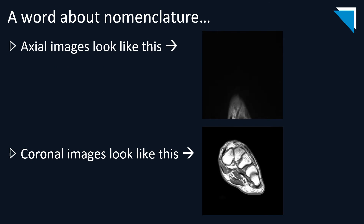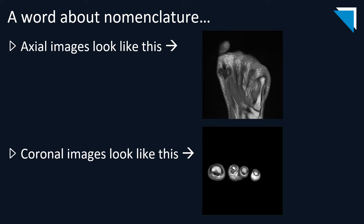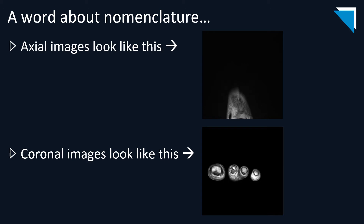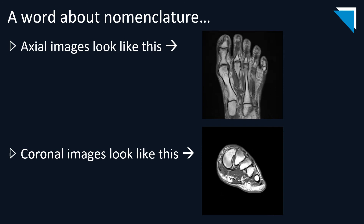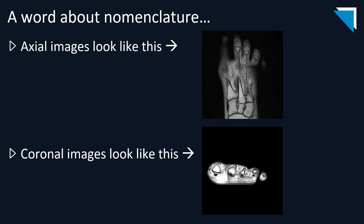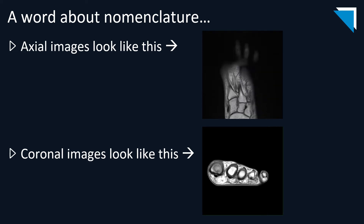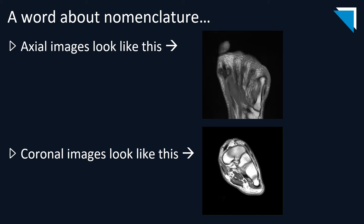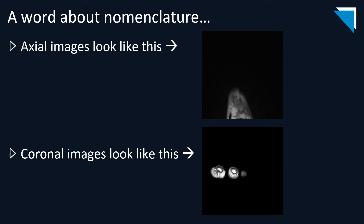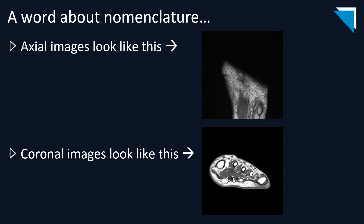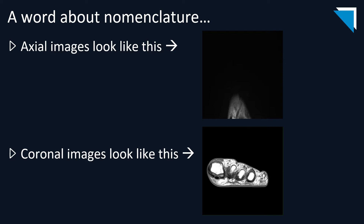Just a brief word about nomenclature, because I do frequently see the MRI sequences mislabeled by the text. This top sequence is an axial sequence, and you can orient yourself by imagining the MRI scanner slicing through the lower leg in the axial plane and continuing through the ankle and the foot in the neutral position. Likewise, the bottom sequence is a coronal sequence — you can orient yourself by imagining the MRI scanner slicing through the lower leg in the coronal plane and continuing through the ankle and foot in the neutral position. You can avoid confusion altogether by simply referencing series numbers in your reports for pertinent images.